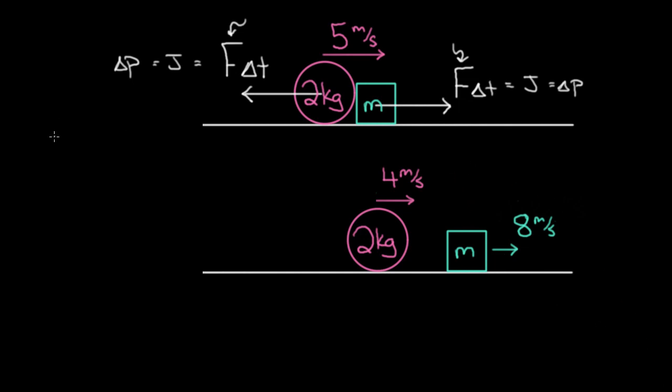So momentum is m times v. Momentum is mv, and it's a vector. You've got to be careful, it has a direction. So I'm not saying the amount of velocity is conserved or anything like that, I'm saying momentum is conserved.